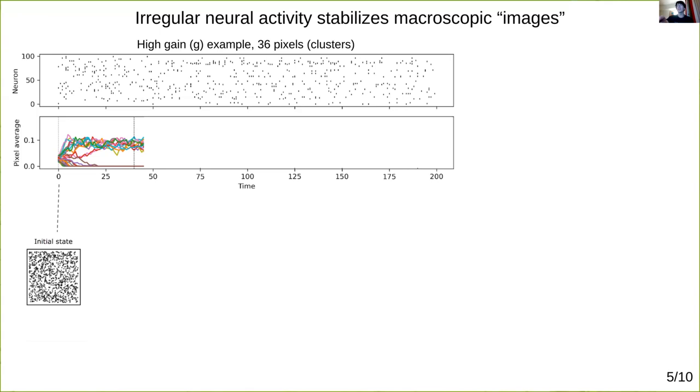As time passes, however, some of the pixels die out, with the total network activity spreading over only a subset of pixels, which remains steadily active.